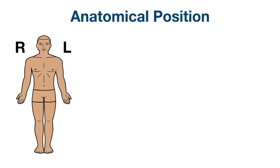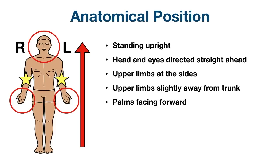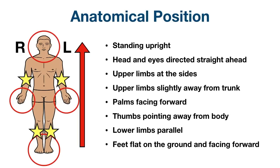As we go through the different directional terms, there needs to be a standard body position that we're using. This is called the standard anatomical position. The correct anatomical position is standing upright with the head and eyes directed straight ahead. The arms are hanging at the sides and slightly away from the trunk so they're not touching the sides. The palms are facing forward and the thumbs are pointing away from the body. The legs are parallel and the feet are flat on the ground facing forward. Right and left refer to the patient's right and left side as indicated by the R and L.